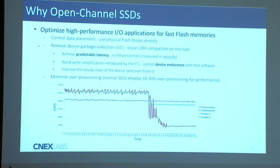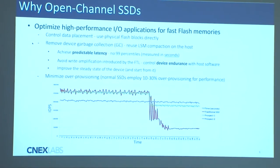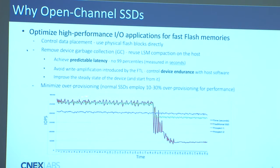Why do you want to do this? This red line is a real NVMe enterprise SSD. In the beginning you get around 250,000 IOPS per second, but then garbage collection kicks in. This particular SSD maintains a nice steady state, but you have no predictable latency — you don't know when garbage collection will kick in — and it affects device endurance. On top of that, you're paying the cost of over-provisioning: manufacturers take 10 to 30%, and some expensive drives use almost 50% over-provisioning to maintain that steady state.